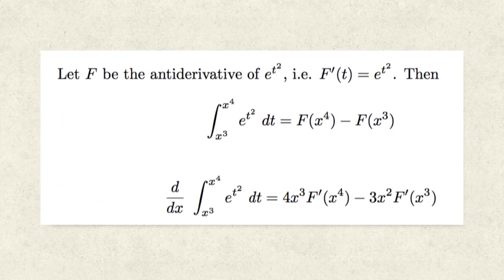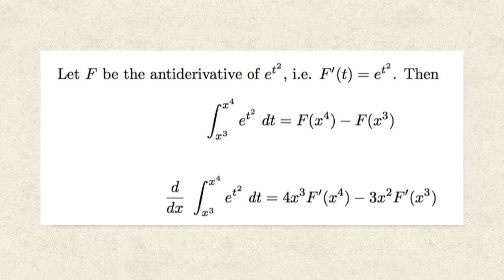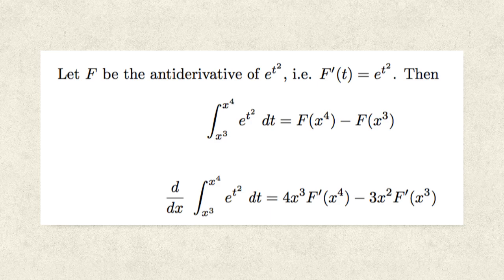So now we go ahead and apply the chain rule to the right hand side of the first equation in order to calculate the derivative of the integral in question. In doing so, we get 4x cubed F prime at x to the fourth minus 3x squared F prime at x cubed. And since F prime at any value t is e to the t squared, we can substitute appropriately to get our final answer.